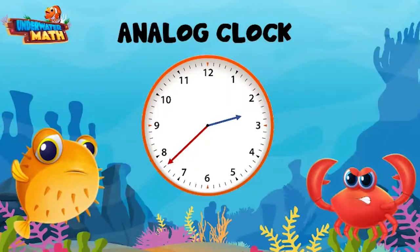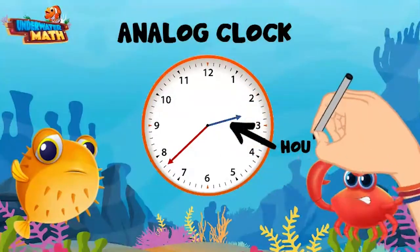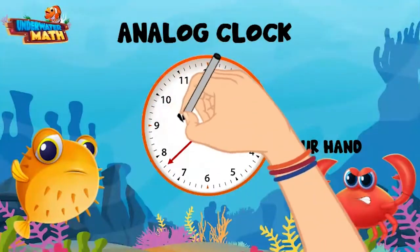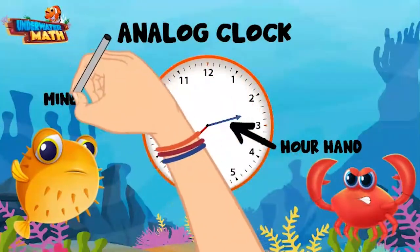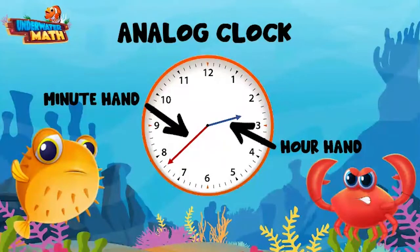What are those stick things on the clock? Those are called hands. There is a short hand and a long hand. The short hand tells us the hour of the day. The long hand tells us how many minutes past the hour it is. As the minute hand moves one full rotation around the clock, the hour hand slowly moves from one big number to the next.